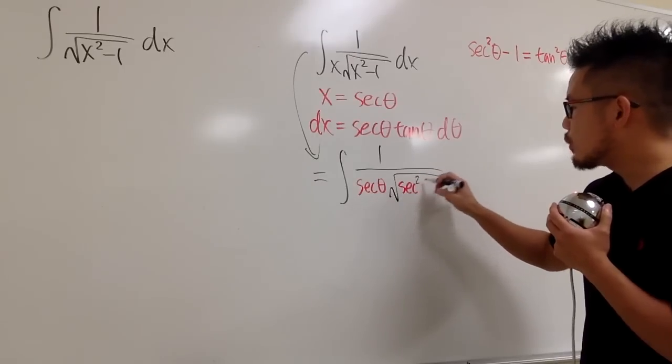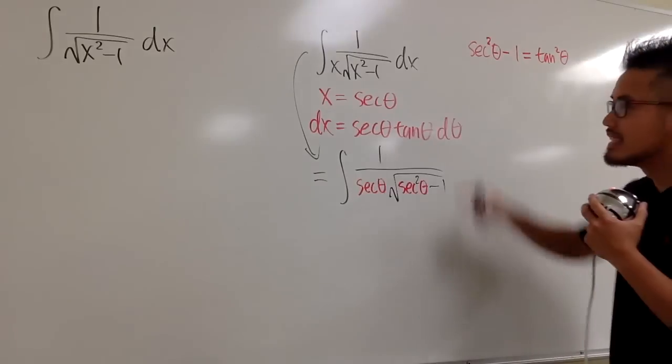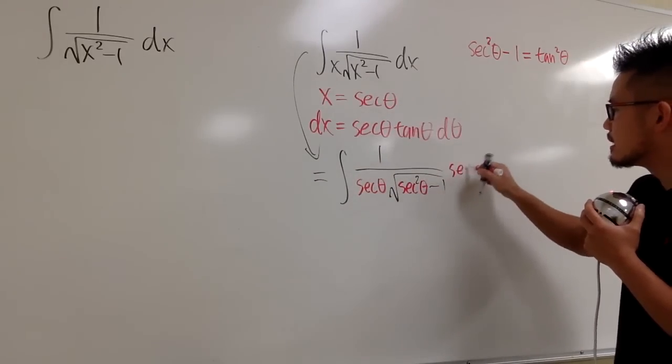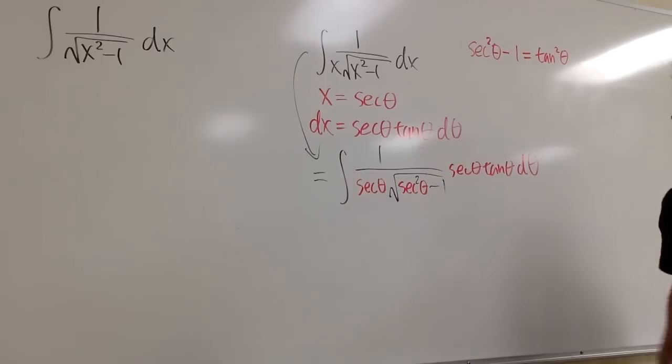But that's the second power. So we have secant squared theta and then minus 1. The dx is the secant theta tangent theta d theta. And now,